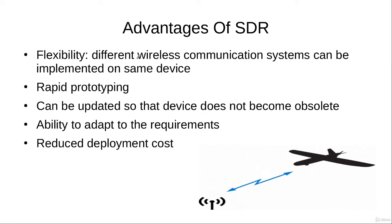This approach of implementing the components of a wireless communication system in software has many advantages. The first advantage is flexibility — using the same generic hardware, we can implement different types of wireless communication systems by just changing the software.